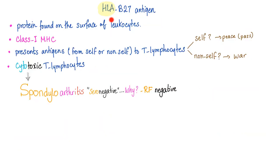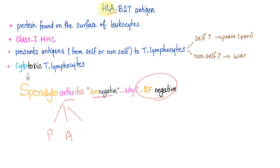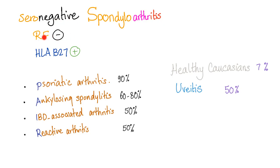HLA-B27 is a protein found on the surface of leukocytes — class 1 — and presents antigens to cytotoxic T lymphocytes. In cases of spondyloarthropathies, we see HLA-B27 positivity. We call them seronegative spondyloarthropathies because they are rheumatoid factor negative. The conditions are remembered by the mnemonic PEAR: Psoriatic arthritis, Ankylosing spondylitis, inflammatory bowel disease-associated arthritis, and Reactive arthritis — rheumatoid factor negative but HLA-B27 positive.